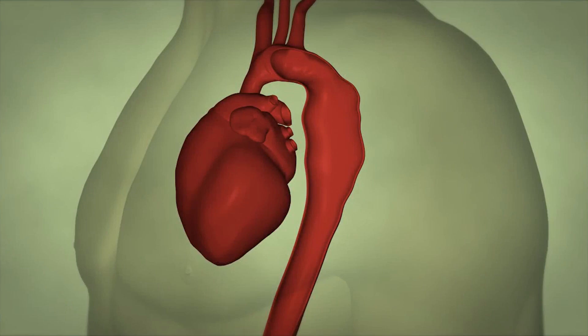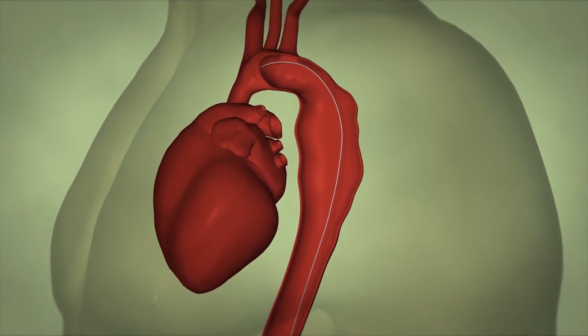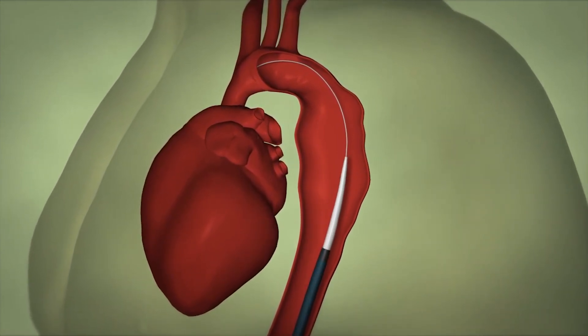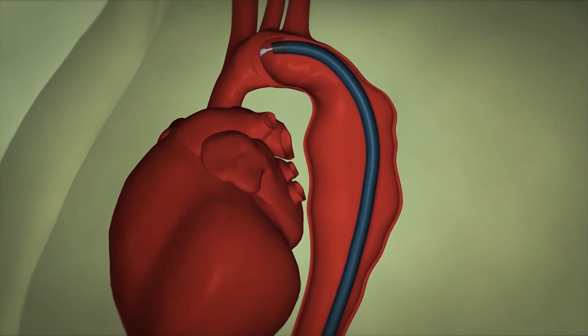This is a rendition of an aneurysm in the descending thoracic aorta. A wire is being inserted from the femoral artery in the groin followed by the main endovascular device inside the blue catheter you can see moving upwards.